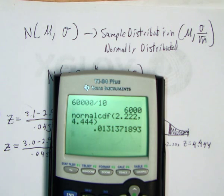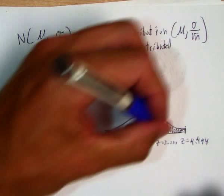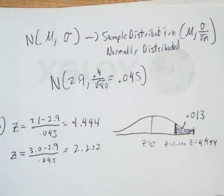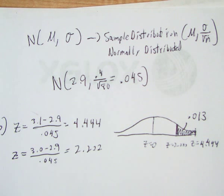If you do that, you get 0.013. So there's about a 1.3% chance that the mean output of all 80 of those cars is between 3.0 and 3.1 grams per mile.